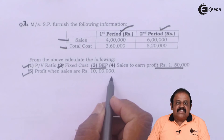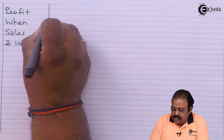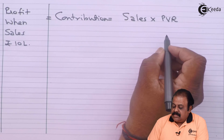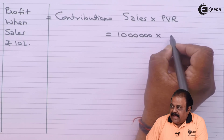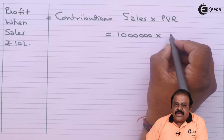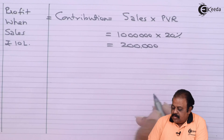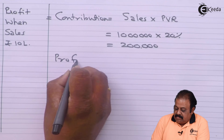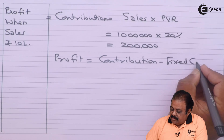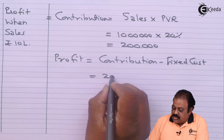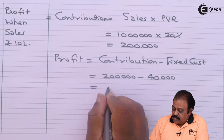For the last part, profit when sales are rupees ten lakhs: contribution equals sales multiplied by PV ratio — ten lakhs multiplied by twenty percent — equals two lakhs. Profit equals contribution minus fixed cost: two lakhs minus forty thousand equals one lakh sixty thousand.